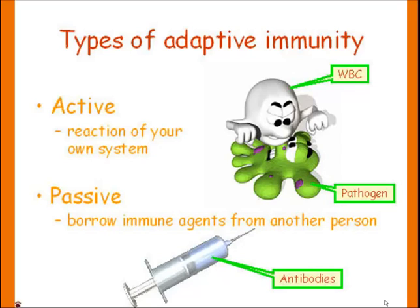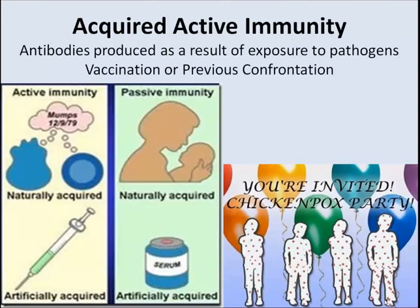There are types of adaptive immunity: active and passive. Active means you had to react with it — you had to get it yourself. Passive immunity is when you received it from another person or agent. Acquired active immunity means antibodies are produced as a result of exposure to the pathogen — either through a vaccine or previous confrontation. For example, if you had chickenpox before, your body will have developed an immunity to it and you should not break out again.